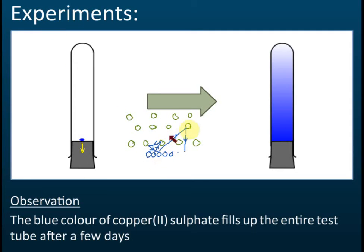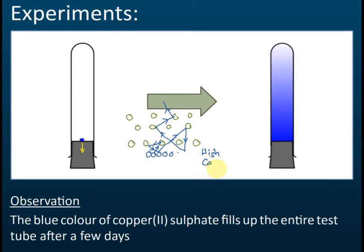The directions of the motion cannot be predicted — they move randomly, going up, bouncing back, hitting other particles. Due to these random motions of all the copper sulfate particles, the blue copper sulfate moves up through the gel. This process is called diffusion. Diffusion is from high concentration of copper sulfate — the concentration at the copper sulfate area is high, and at the other area of the gel the concentration is lower.